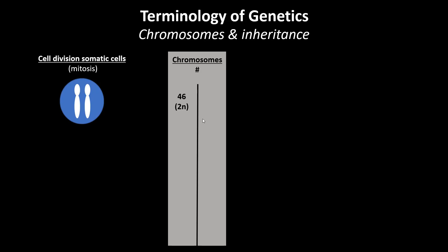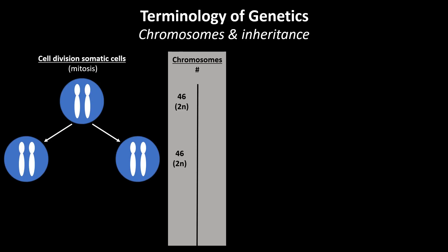In order to understand how chromosomes are inherited, it is important to understand the difference between the division of a normal and a reproductive cell. The cell division of a normal cell of the body is called mitosis. Mitosis results in two daughter cells which both have the same number of chromosomes as that of the original cell before the division.